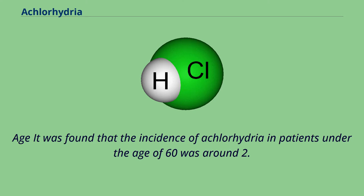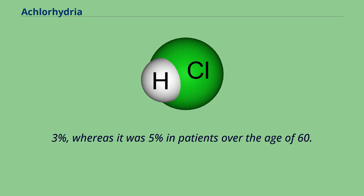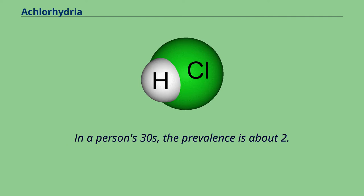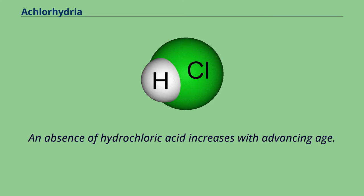Regarding age, it was found that the incidence of achlorhydria in patients under the age of 60 was around 2.3%, whereas it was 5% in patients over the age of 60. In a person's 30s, the prevalence is about 2.5%, and increases to 12% in a person's 80s. An absence of hydrochloric acid increases with advancing age.